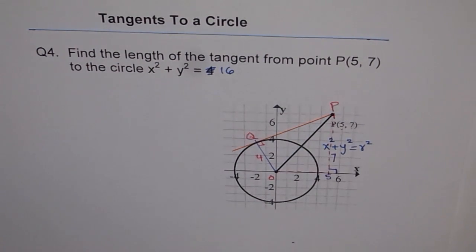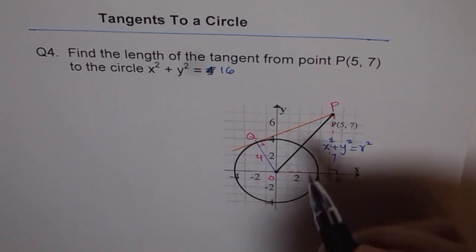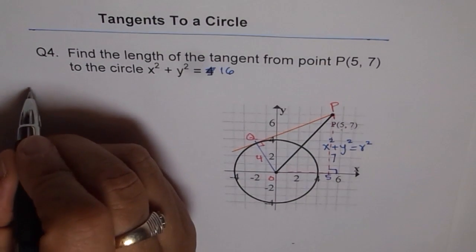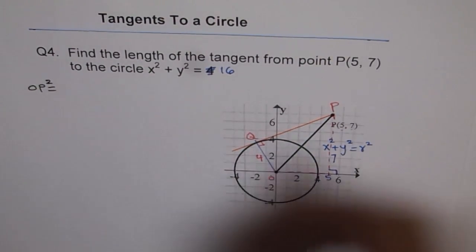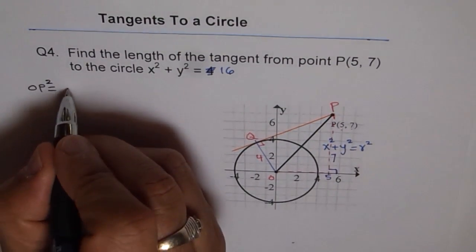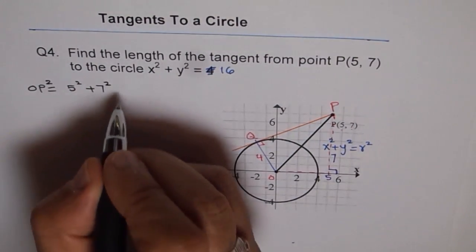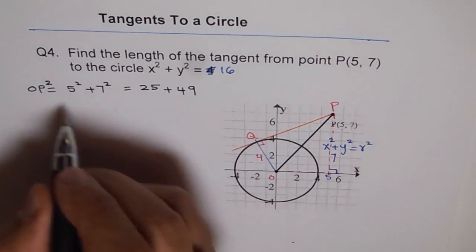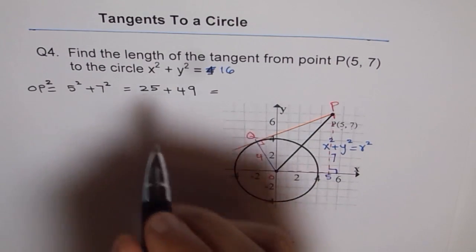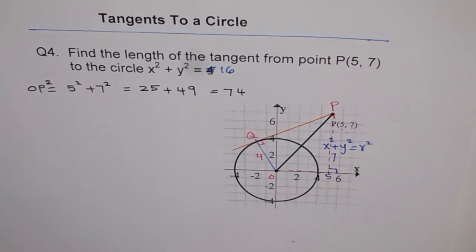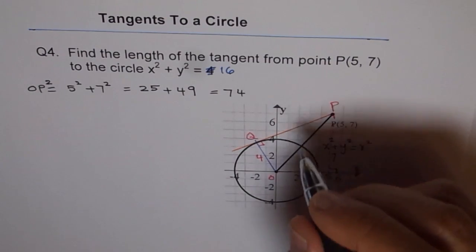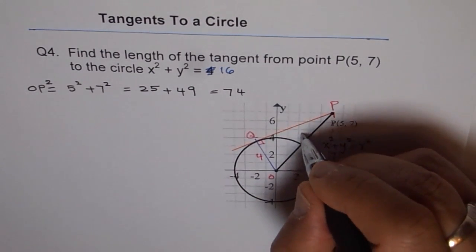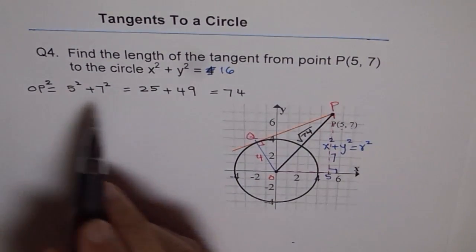Therefore, from here we can find OP. We have OP² equals 5² + 7², which is 25 + 49. We can add this up and we get 9 plus 5 is 14, so we get 74. So that is OP². We know OP now, and that is √74. This length will be √74.